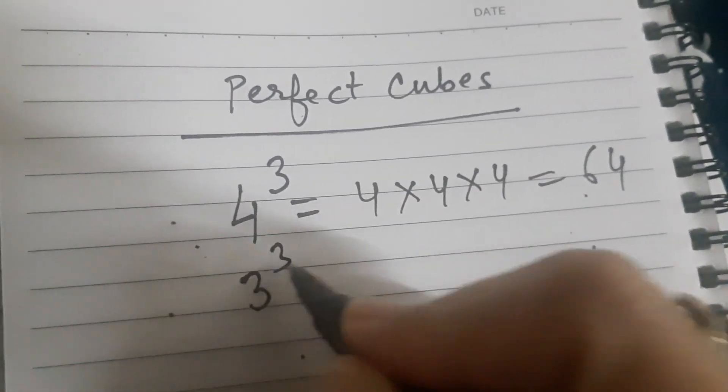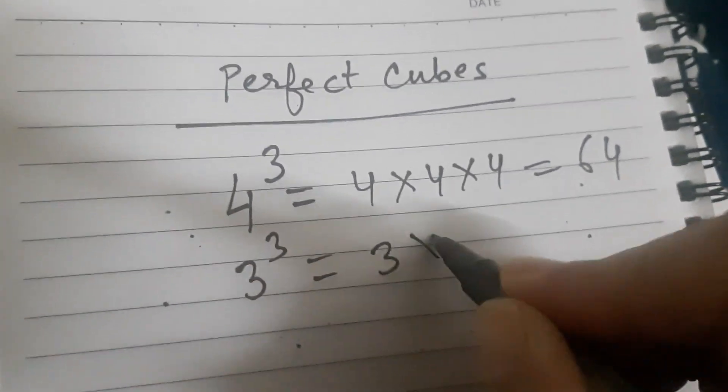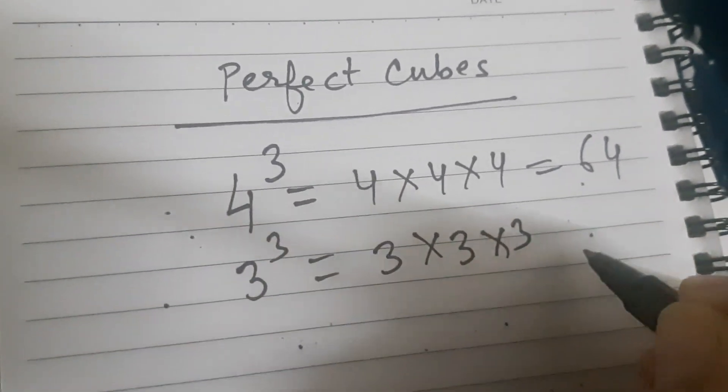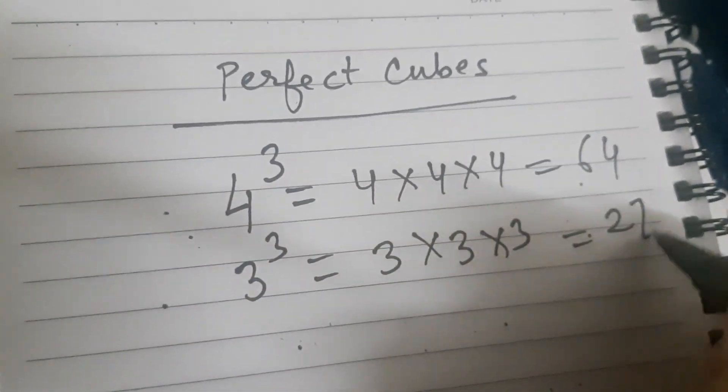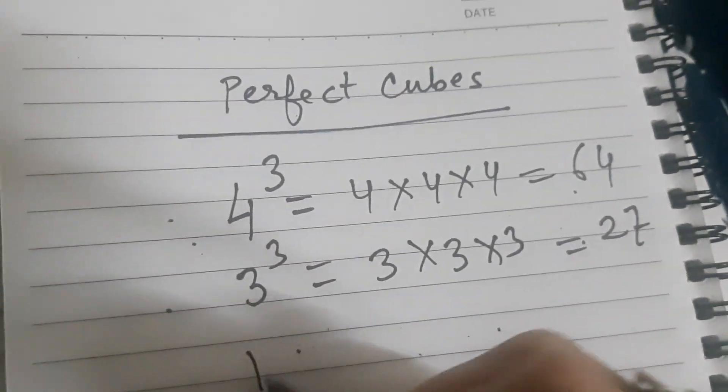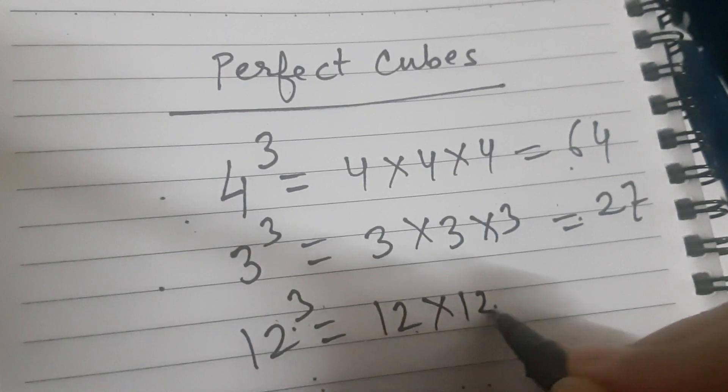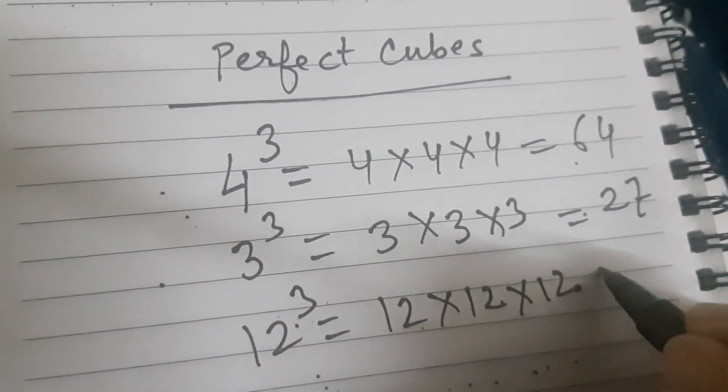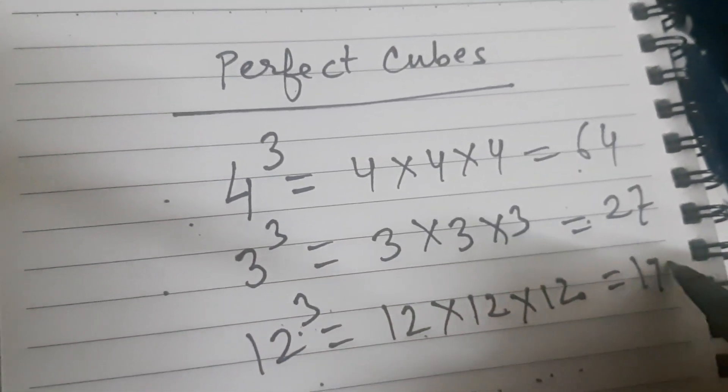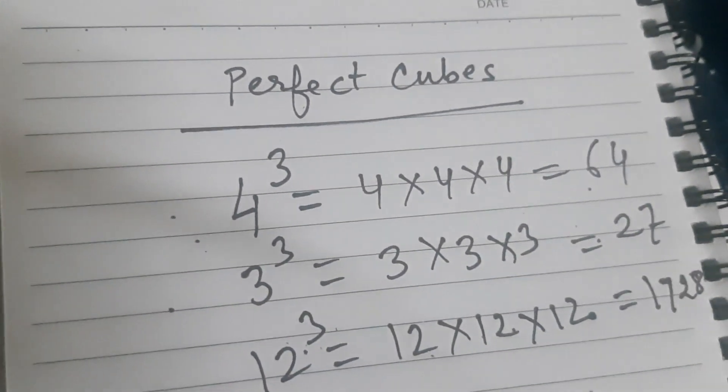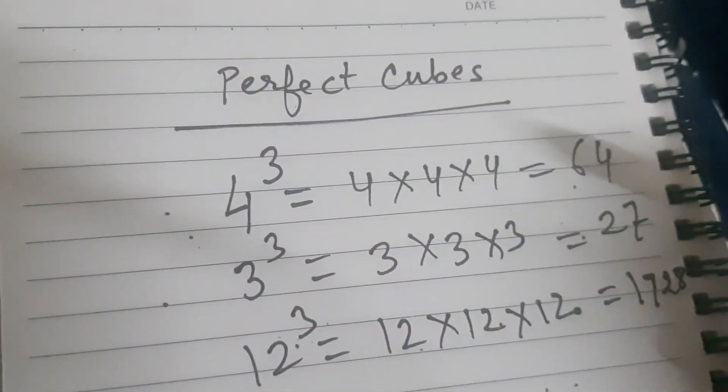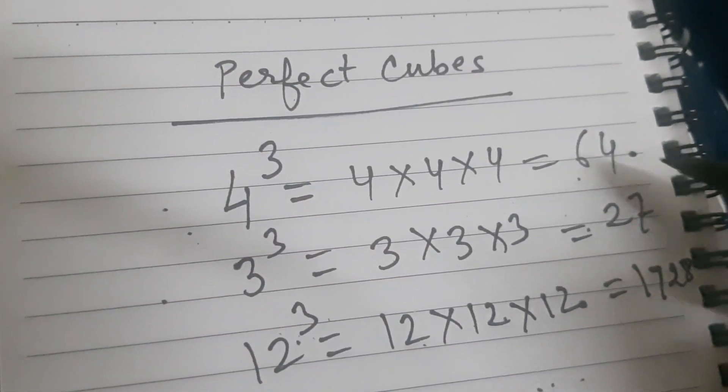Now tell me, what is 3 cube? 3 cube is 3 into 3 into 3, which is 27. What is 12 cube? 12 cube is 12 into 12 into 12, which is 1728. Now observe carefully the numbers 64, 27, and 1728.